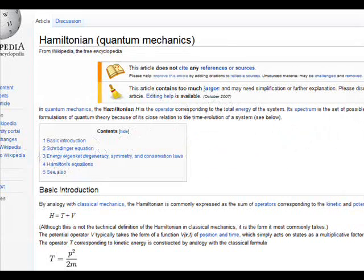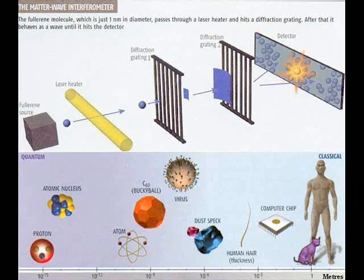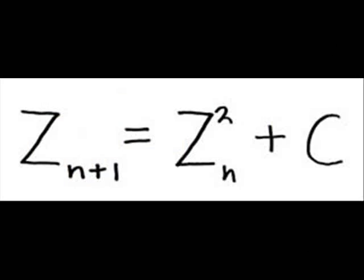Both formalisms attempt to calculate these things in terms of energy using total energy operators known as Hamiltonians. This is a useful but completely backwards attempt at understanding what nature is actually doing. Compare it to mathematically modeling a fractal without the original generation code.